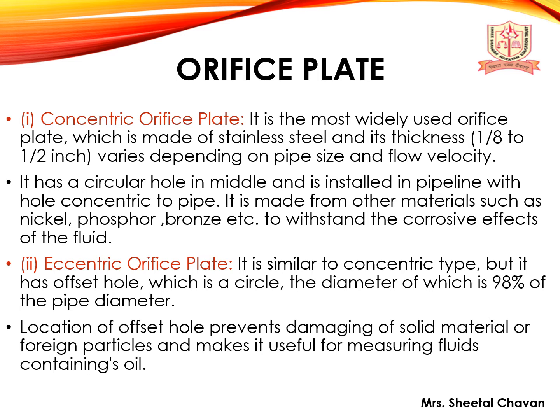The first type is the concentric orifice plate, which is the most widely used. It is made of stainless steel with a thickness of 1/8 to 1/2 inches, varying depending on pipe size and flow velocity. It has a circular hole in the middle and is installed in a pipeline with the hole concentric to the pipe. It can also be made from other materials such as nickel, phosphorus, and bronze to withstand corrosive effects of the fluid.